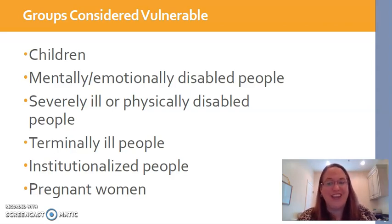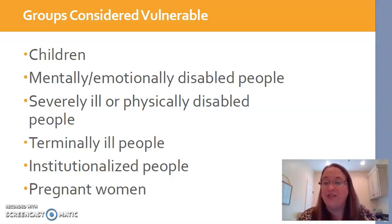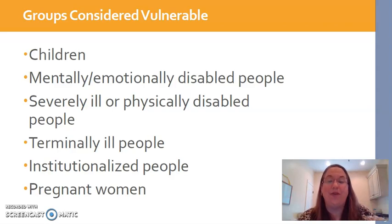So as a researcher, if I have a child who I want to study who is between 7 and the age of consent — 17 or 18, whatever it may be — then not only do I need to get consent from the parent or legal guardian, but I should also try to get ASSENT.